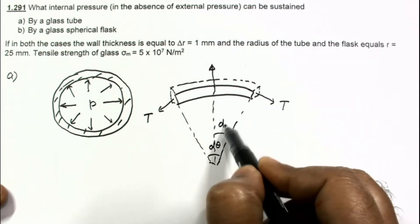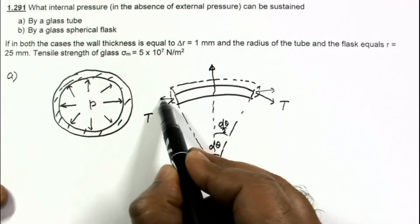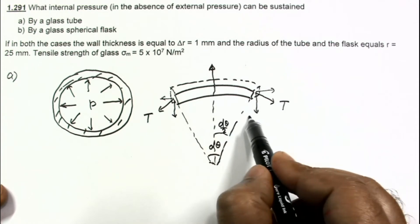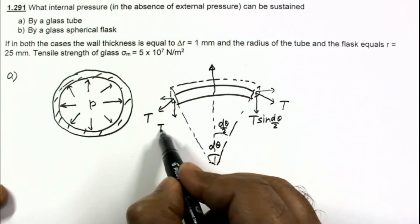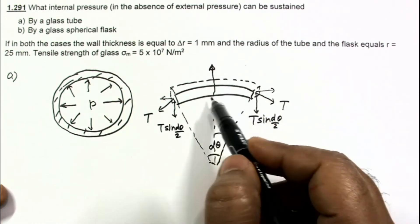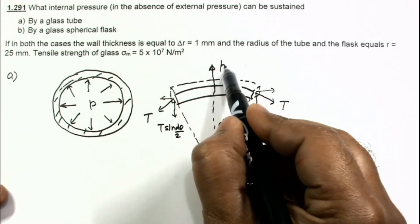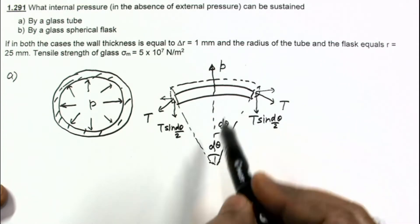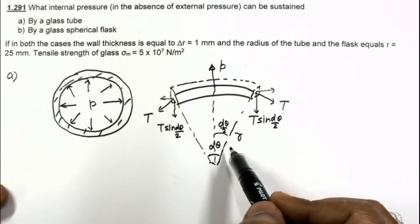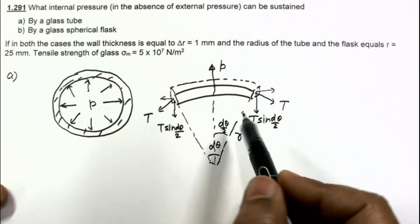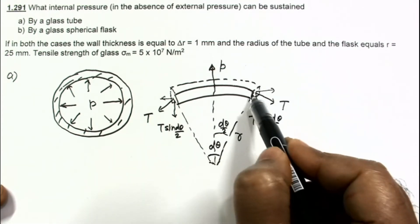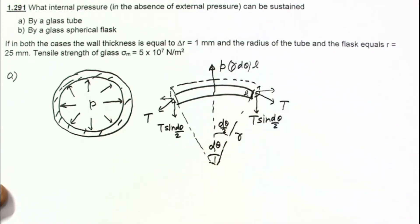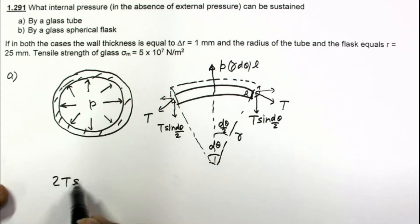By symmetry, the angle is dθ/2 on each side. The components of tension in the outward directions cancel out, and the components of tensions are balancing the force due to internal pressure on this element. These two components are T·sin(dθ/2) and T·sin(dθ/2), which add up to balance the force due to internal pressure, given by p multiplied by the arc length r·dθ multiplied by length l.